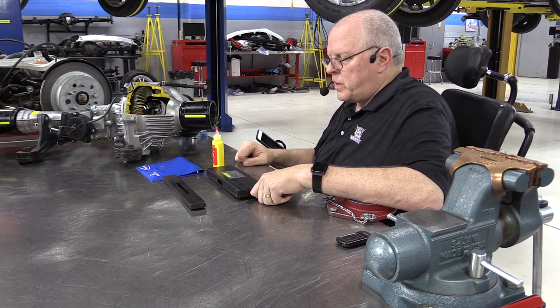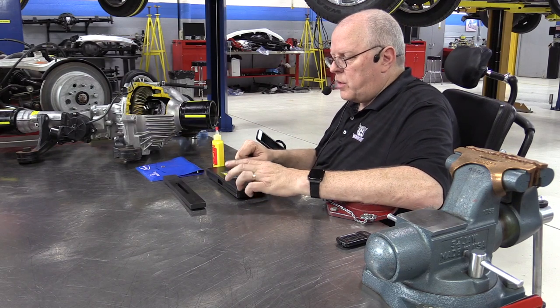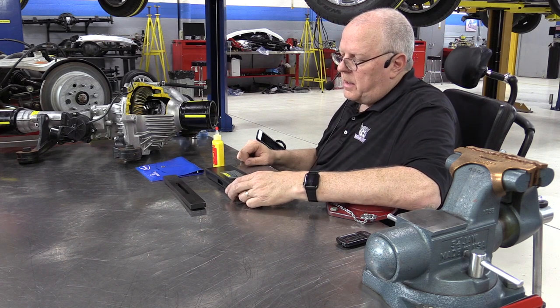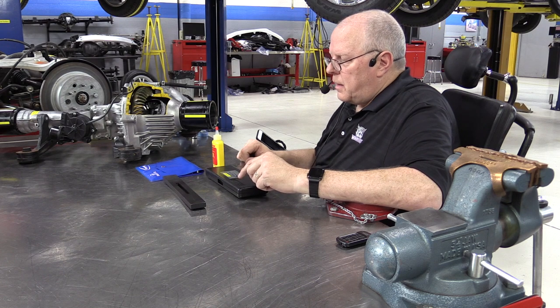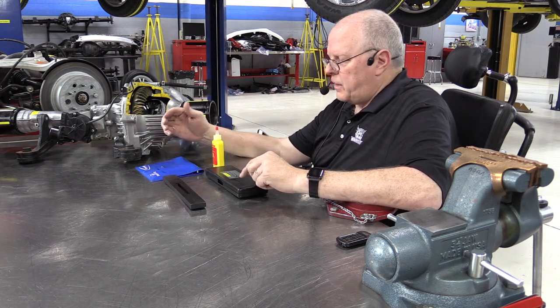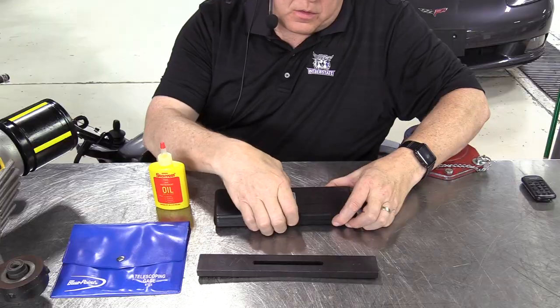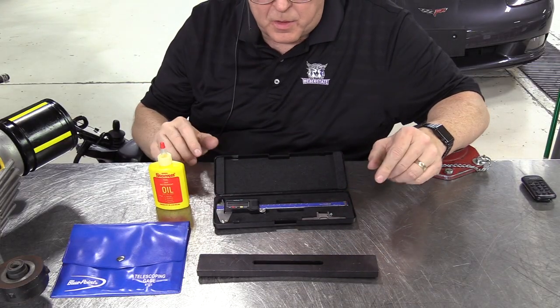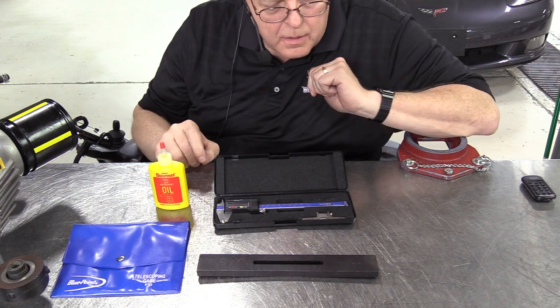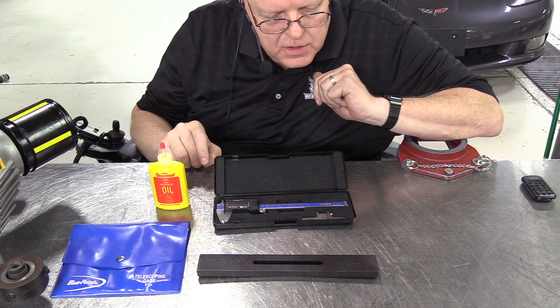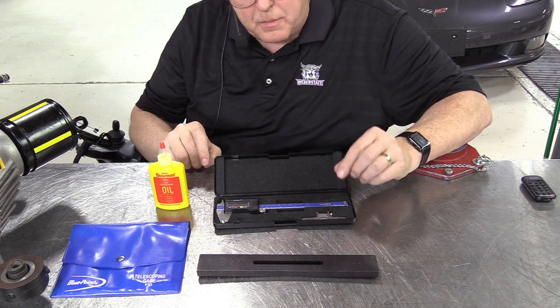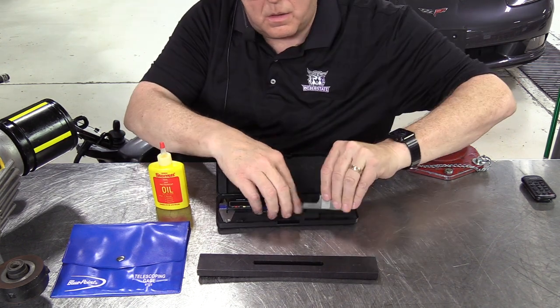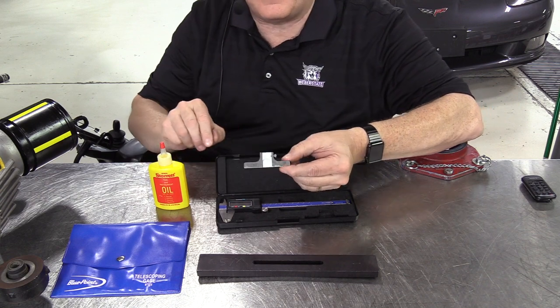Okay, the next precision measuring tool I want to show you how to use for my transmission lab classes is a digital caliper along with telescoping gauges. I've got a digital caliper here that we got through Snap-on Blue Point part number MCAL6A. I also purchased a Starrett depth measuring adapter.